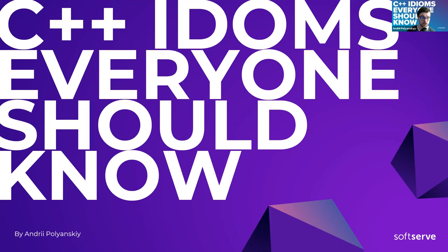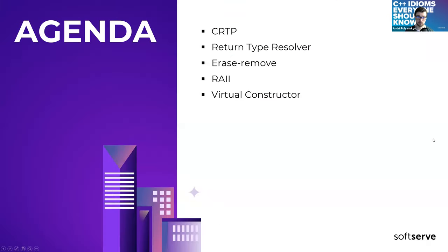I would even say we start from the basics. For now, we have five items on the table: CRTP, return type resolver, erase-remove, and virtual constructor.